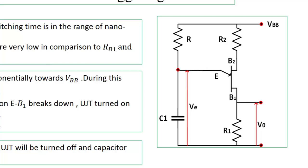R1, R2 are very small resistances, comparatively lesser than RB1 and RB2. So when the capacitor voltage reaches peak point voltage, the UJT will be on, and current will flow through VBB, R2, B2, B1, R1.